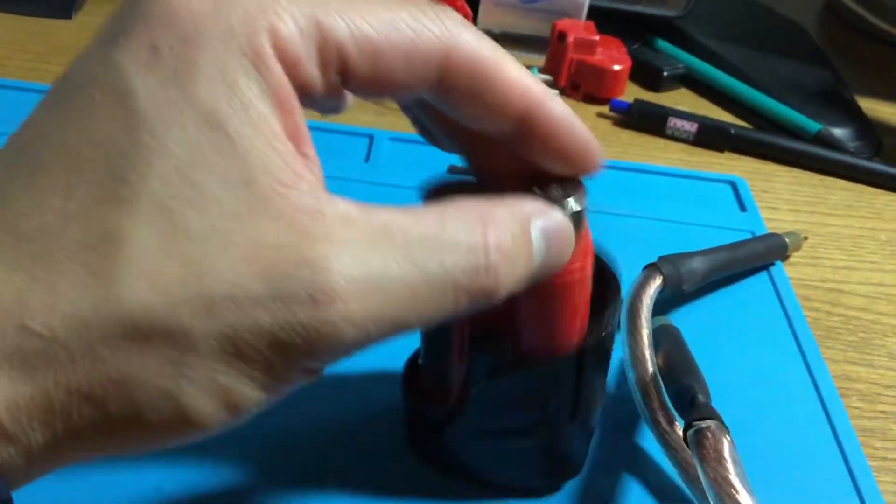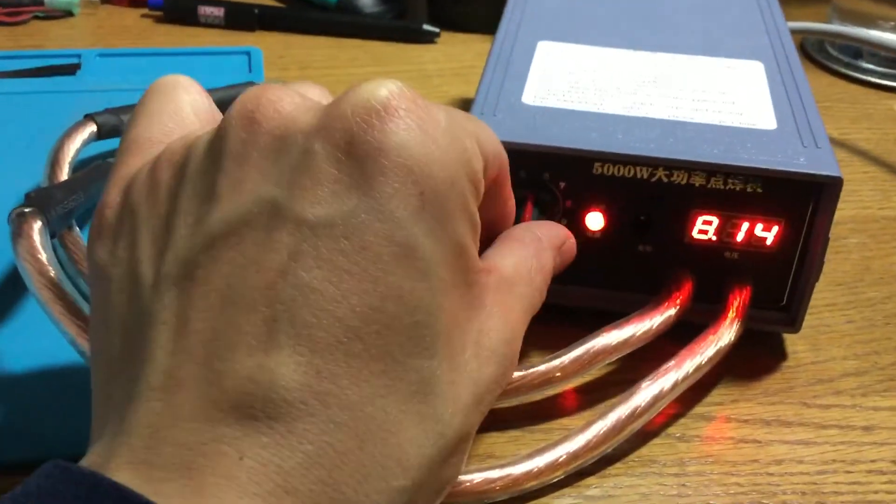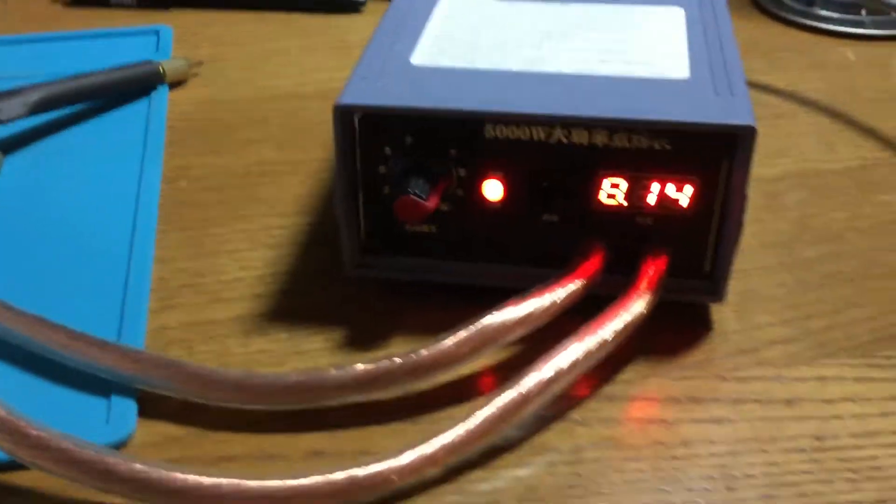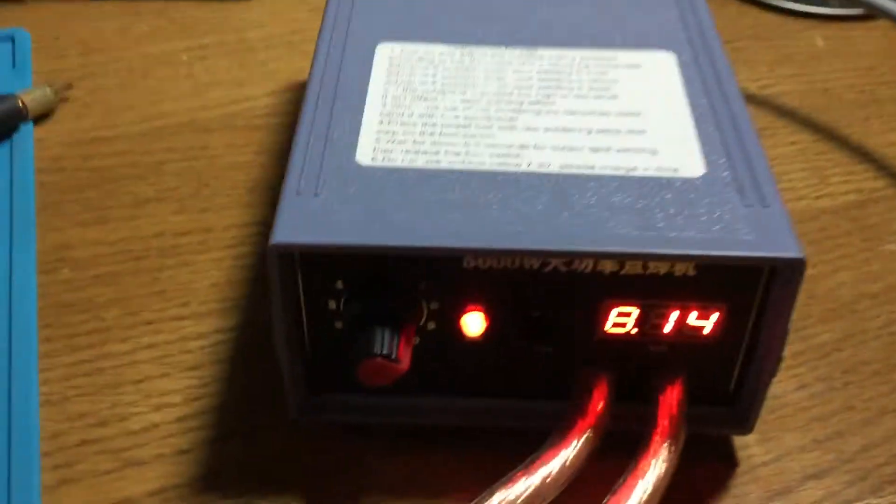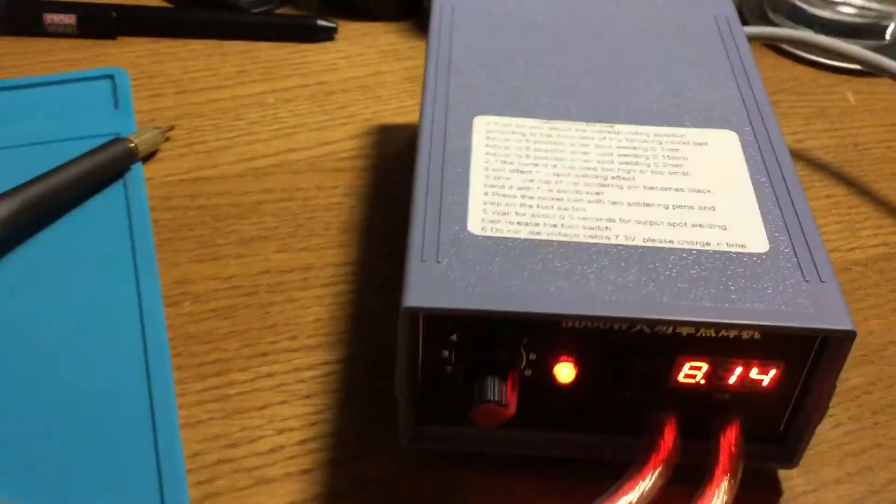I just have this as a jig right now, just to hold everything. I have my KK Moon Spot Welder, fully charged up, 8.14 volts. It says right here, adjust to position 8 when you're welding 0.2. So we are going to give it a shot and see what this looks like.